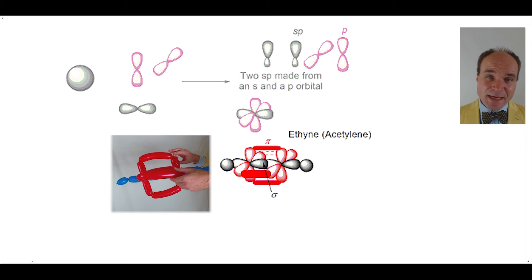Also, on each carbon we have two p orbitals. So as the two carbons come together, we will create two pi bonds. Notice that one pi bond is above and below, the other pi bond is forwards and backwards.